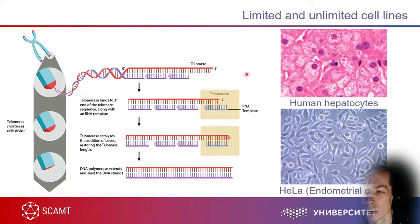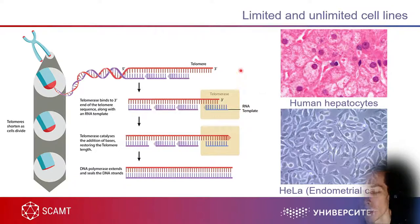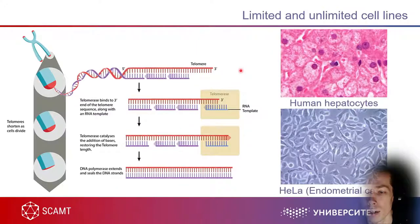However, if we use telomerase as a drug for aging treatment, we will definitely accumulate mutations, and those mutations will lead to cancer. So we need to understand: live shorter without cancer, or live longer but with cancer? Living with cancer will not lead to a long life after all. It is a very complicated question, but telomere and telomerase are used to make limited or unlimited cell lines.